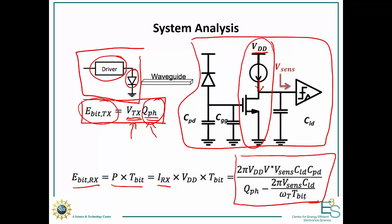And what we can see is that the energy consumed by the receiver is proportional to the capacitance of the photodiode and inversely proportional to the photon charge. So basically, in this case, the more photons you receive at your photodiode, the less energy you consume, because you've already got a significant signal and you don't need to amplify it as much.